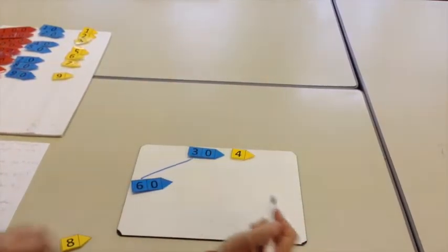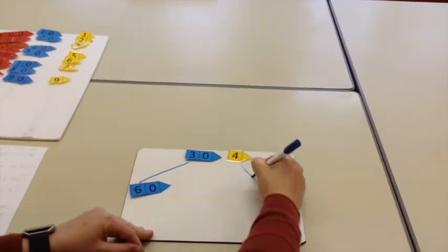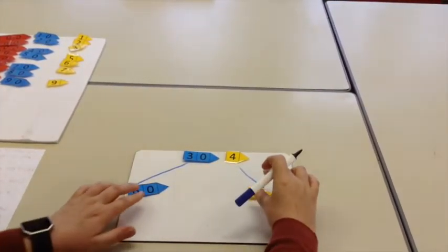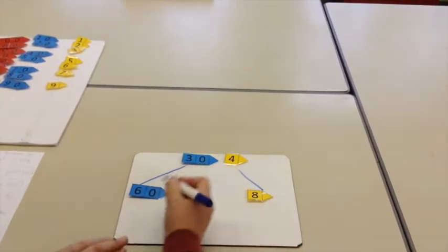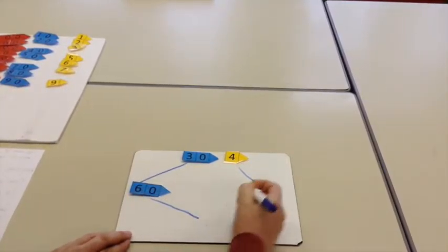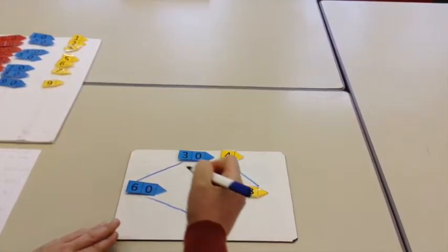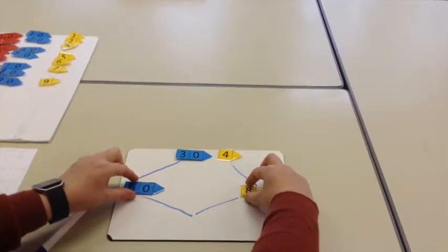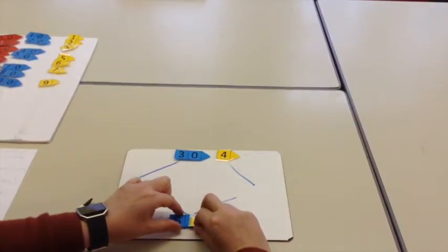Then we double the 4. Double 4 makes 8. Next, draw the diamond. Put the tens and units together and double 34 becomes 68.